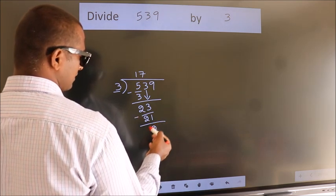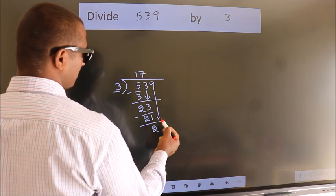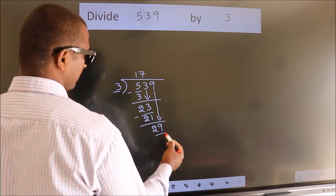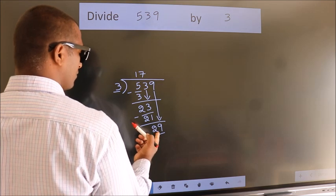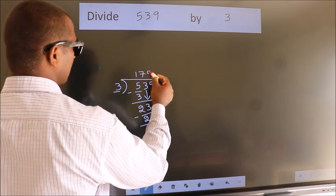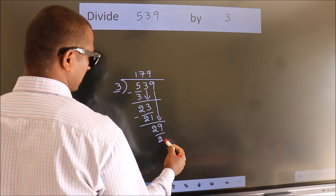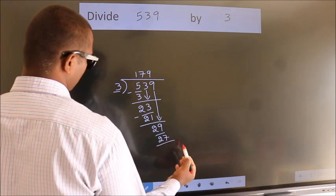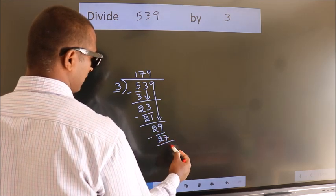After this, bring down the beside number. So, 9 down. So, 29. A number close to 29 in 3 table is 3 nines 27. Now, we subtract. We get 2.